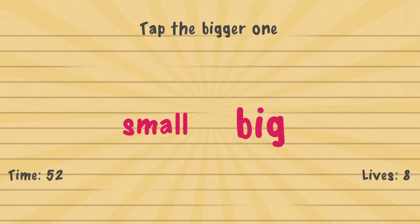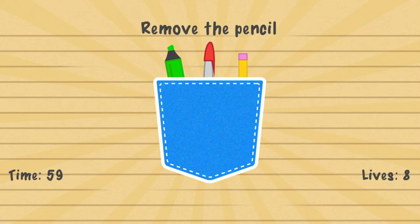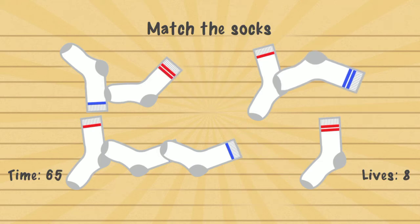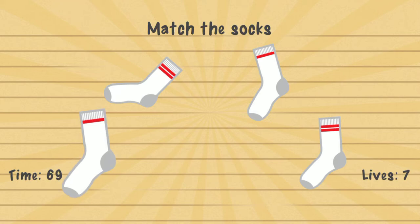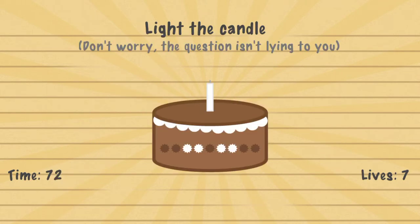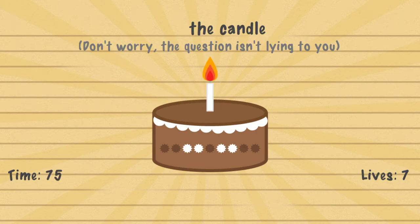Tap the bigger one — you have to tap the bigger text, so you tap 'big'. Remove the pencil — you have to remove the pencil. Match the sock — you have to pair each sock based on the number of stripes and the color. Light the candle — take the word 'light' and then drag it onto the candle.